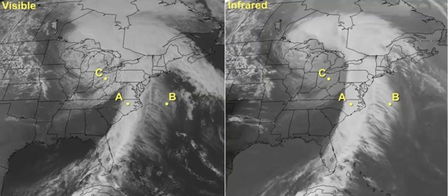Let's use these side-by-side visible and infrared images to see how weather forecasters use both types of images to diagnose cloud types. Even though these images look pretty similar at first glance, they're displaying very different things. Visible satellite imagery is most like what we see with our eyes — it's based on the amount of visible light that gets reflected back to the satellite.